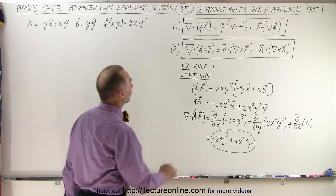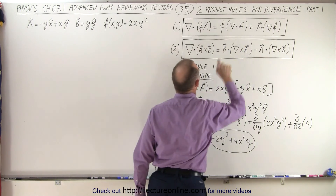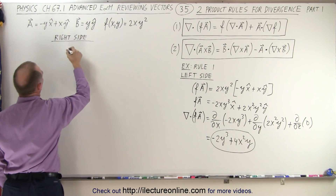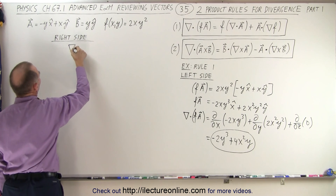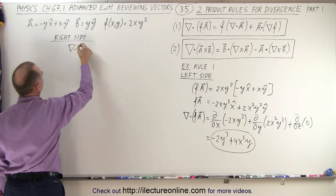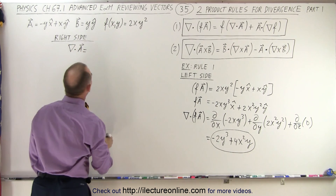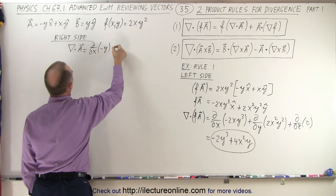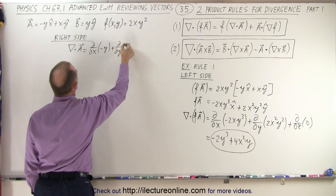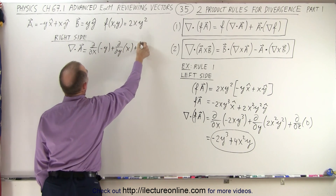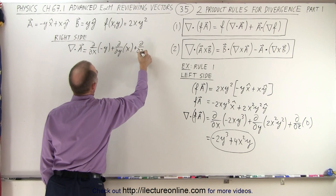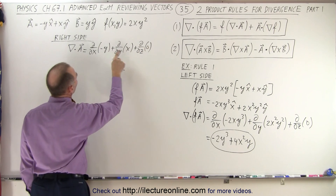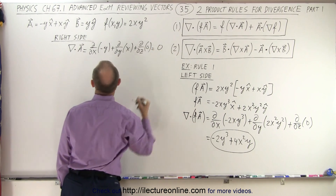Now we're going to calculate the right side, and that better be equal to what we just found. We're first going to take the divergence of A. This is equal to the partial derivative with respect to x of minus y, plus the partial derivative with respect to y of x, plus the partial derivative with respect to z of 0. That's going to be 0, 0, and 0, so the divergence of A is equal to 0.